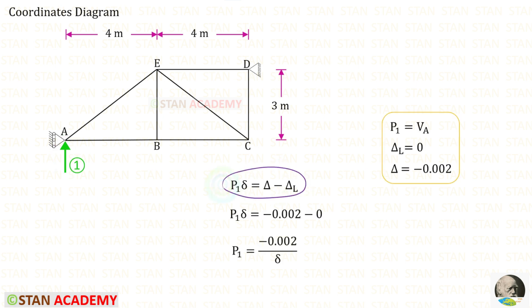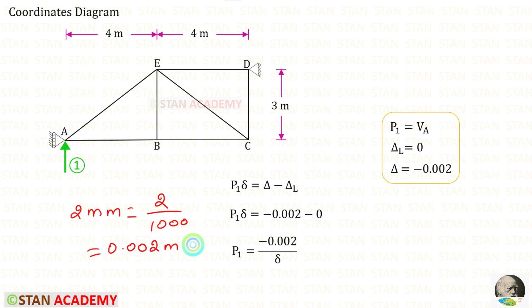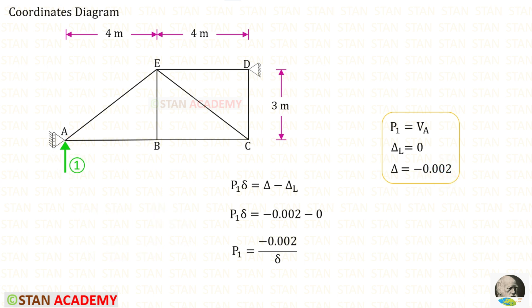We know the formula we are going to use to find VA. P1 will be equal to VA. In the truss there is no load, so delta_L will be 0. The support at A sinks by 2 mm, which we convert to meters: 2/1000 = 0.002 meter. The sinking occurs downwards, but the coordinate is in the upward direction — both have different directions, so we apply this value as negative. Taking delta to the other side, it comes in the denominator.